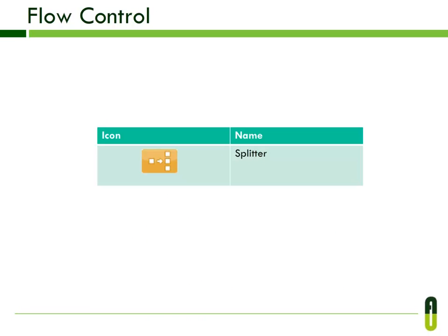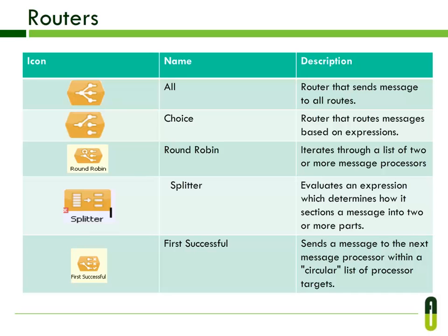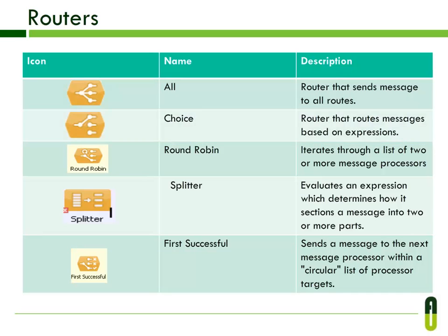Here you can see flow control. Flow control refers to message processors that control the destination of messages in a flow. The Splitter uses an expression to split a message into pieces, all of which are then sent to the next message processor. The All router can be used to send the same message to multiple targets — it routes messages to all routes.